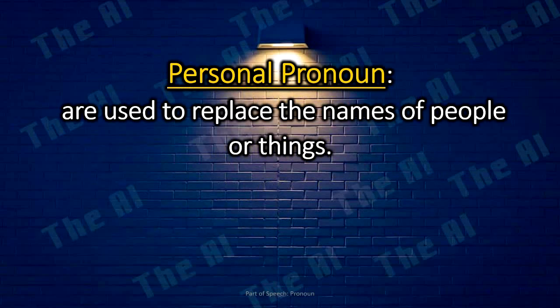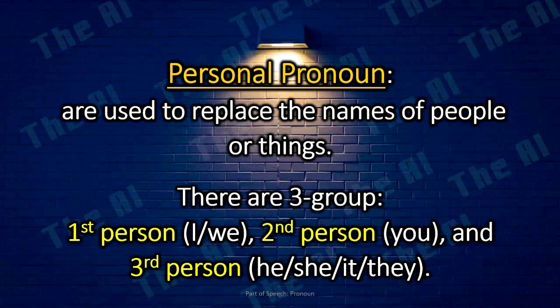Personal pronouns are used to replace the names of people or things. There are three groups: first person — I, we; second person — you; and third person — he, she, it, and they.